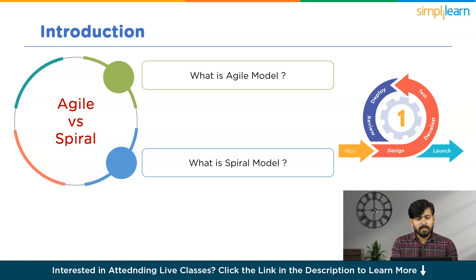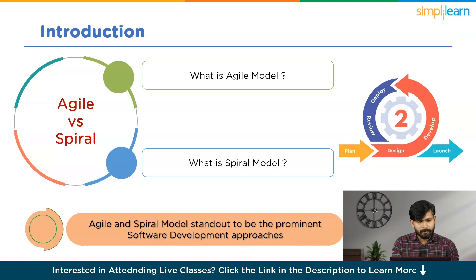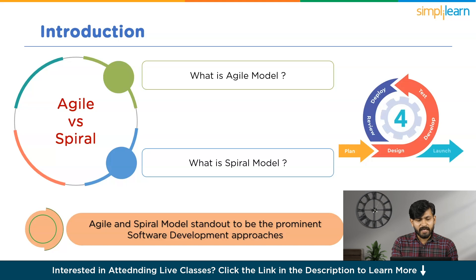The Spiral Model represents a risk-driven approach that incorporates elements from both the waterfall and prototyping models. It addresses the challenges posed by large, complex projects with a focus on systematic risk analysis and management. Both Spiral and Agile methodologies stand out as prominent software development approaches. Now let's move on to their lifecycle phases.